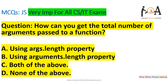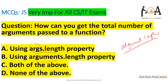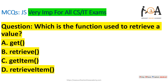The next question is: how can you get the total number of arguments passed to a function? The correct syntax is arguments.length. Do not confuse it with args.length — you must use the full word 'arguments'. Using the arguments.length property, you can get the total number of arguments passed to a function. The correct option is B.